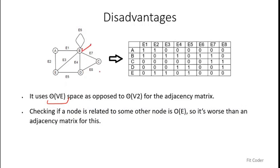The second reason is that if you need to find out whether a particular node is related to another node, there is no straightforward method. In adjacency matrix you simply check the entry for B and C — if it's 1 an edge exists, if 0 it does not. In the incidence matrix you have to parse the entire row for B and the entire row for C, then find a common column where both entries are 1. For example, E7 shows both B and C as 1, so E7 connects them. This requires a linear search — O(E) — which is worse than adjacency matrix.